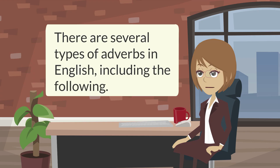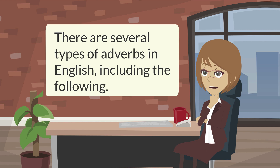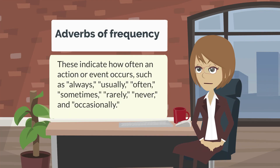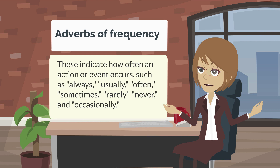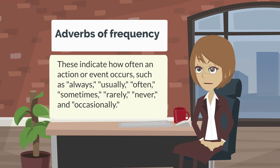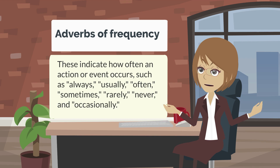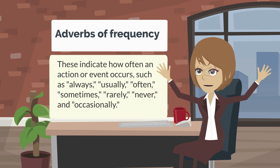There are several types of adverbs in English, including the following. Adverbs of frequency: these indicate how often an action or event occurs, such as always, usually, often, sometimes, rarely, never, and occasionally.